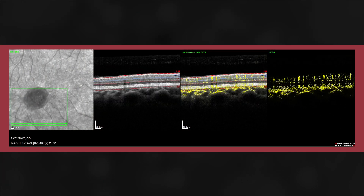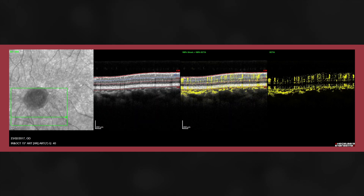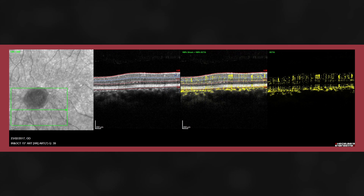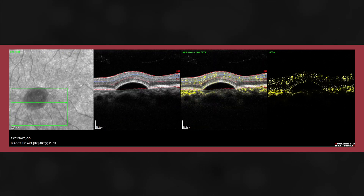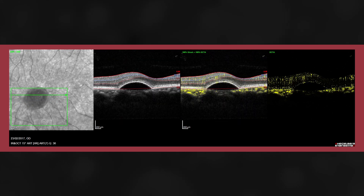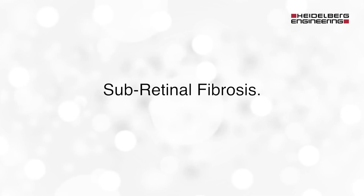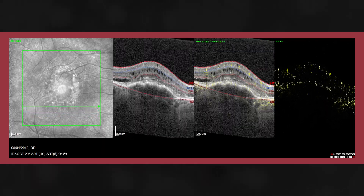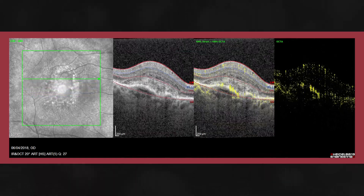In this example, we can see structural OCT plus flow. We try to identify non-physiological flow; of course, physiological flow within the choroid and retina is expected. In this particular example, there is a serous PED, and it would be important to identify whether this is driven by neovascularization. As we run through the images, we see no abnormal flow at the edges of the pigment epithelial detachment. In the next example, we see a pigment epithelial detachment with abnormal flow associated with it, which may be indicative of choroidal neovascularization.